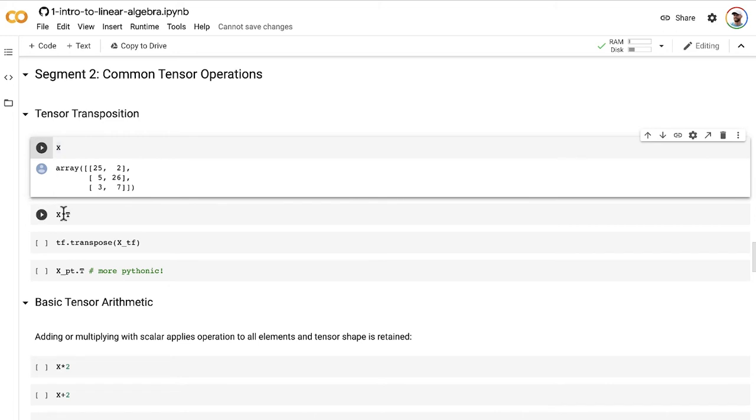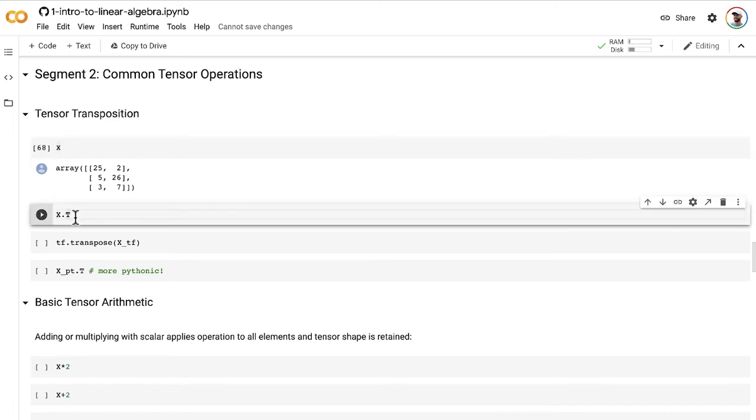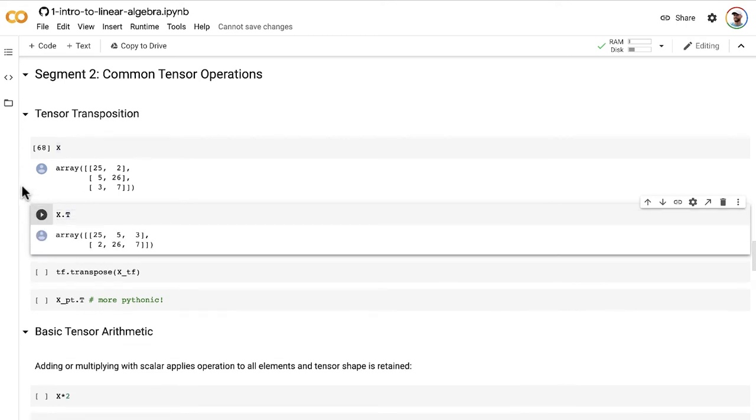And when we take the transpose of it, which is super easy in NumPy, we just put dot capital T on the end of our tensor, and boom! It outputs that tensor now transformed. You can go have a look.